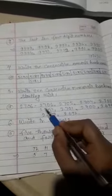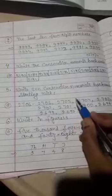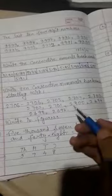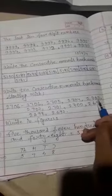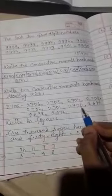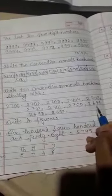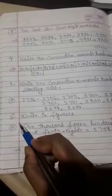2706, before number 2705. 2706 minus one, 2705. 2705 minus one, that is 2704. 2704 minus one, that is 2703, 2702, 2701, 2700, 2699, 2698, 2697. Question number six: write in figures.